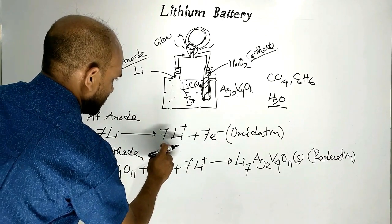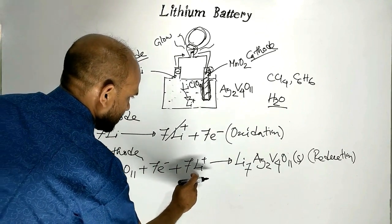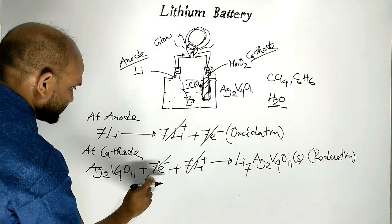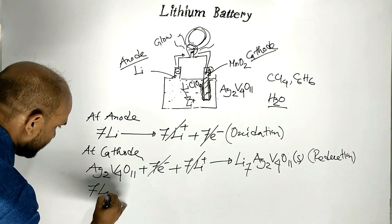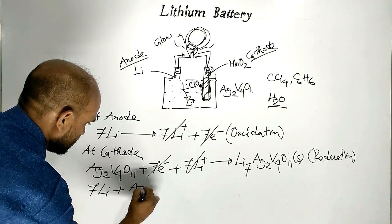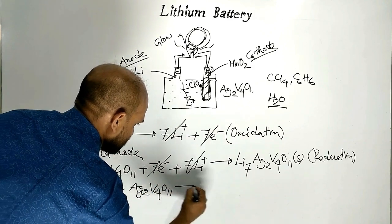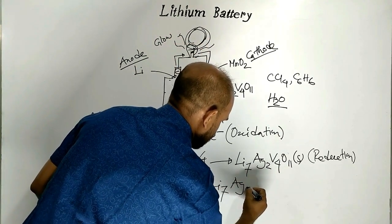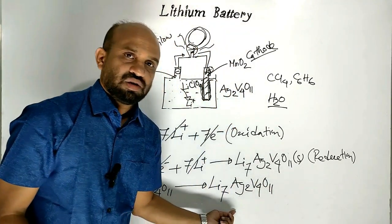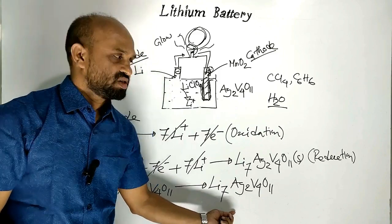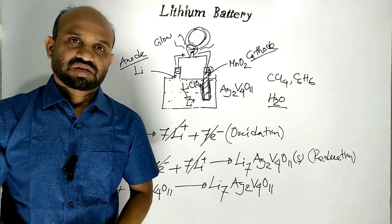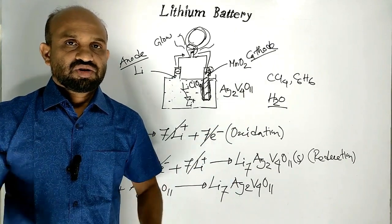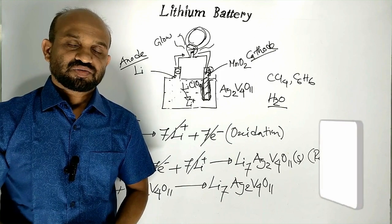Now the overall reaction: seven lithium ions and seven electrons on both sides cancel out. The overall reaction is: seven lithium atoms plus silver vanadium oxide gives lithium₇ silver vanadium oxide. This is an electrochemical cell in which chemical energy converts to electrical energy. When silver vanadium oxide is used as cathode, this is the kind of lithium battery used in heart pacemakers.